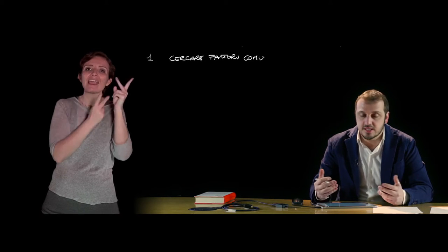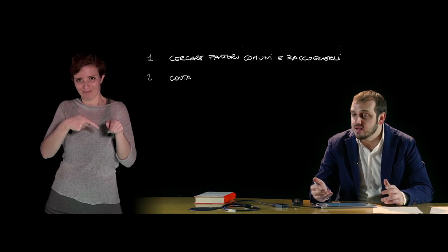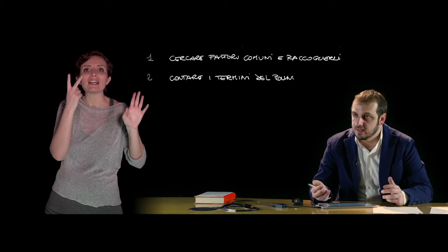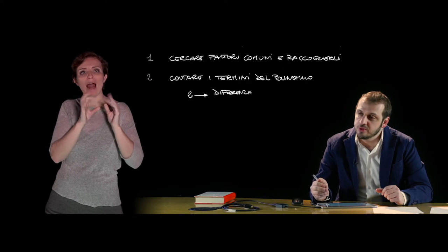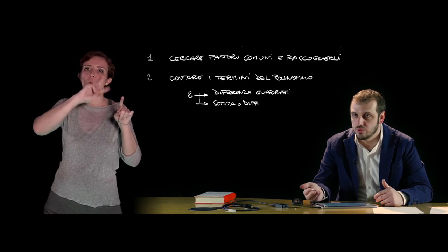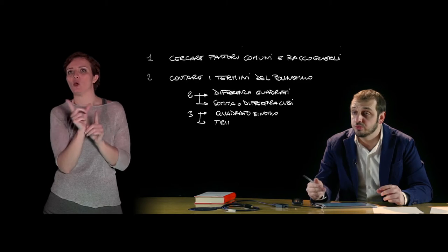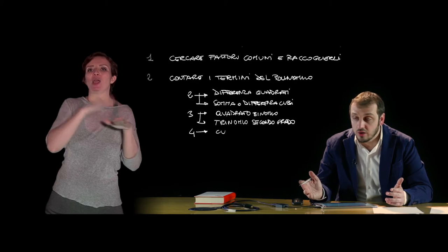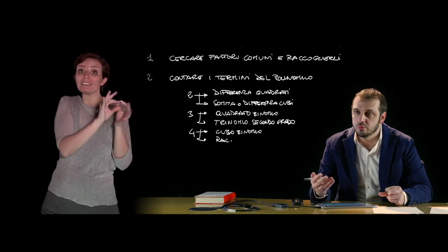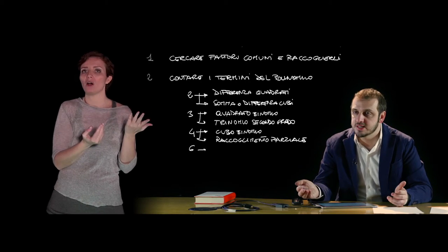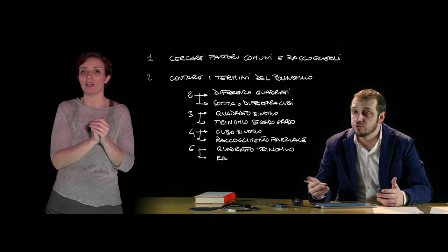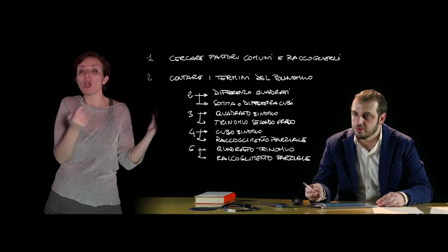Riassumendo le regole pratiche per scomporre un polinomio: prima di tutto cercare fattori comuni da raccogliere. Poi contare i termini del polinomio per scegliere la tecnica più efficace: due termini potrebbero essere differenza di quadrati o somma/differenza di cubi; un trinomio potrebbe essere quadrato di un binomio o trinomio di secondo grado; un quadrinomio potrebbe essere cubo di un binomio o raccoglimento parziale; sei termini potrebbero essere quadrato di un trinomio o raccoglimento parziale.